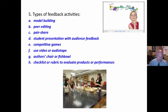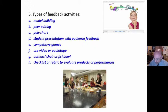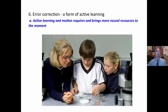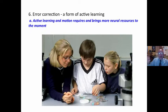Messing about and trial and error is the way the brain naturally works. Types of feedback activities include: model building, peer editing, pair-share, turn to a neighbor, student presentations with audience feedback — tell the student two things they did well and two things to work on — competitive games, video or audio taping oneself, author's chair or fishbowl activities where small groups perform and the class watches, and checklists or rubrics to evaluate products and performance.